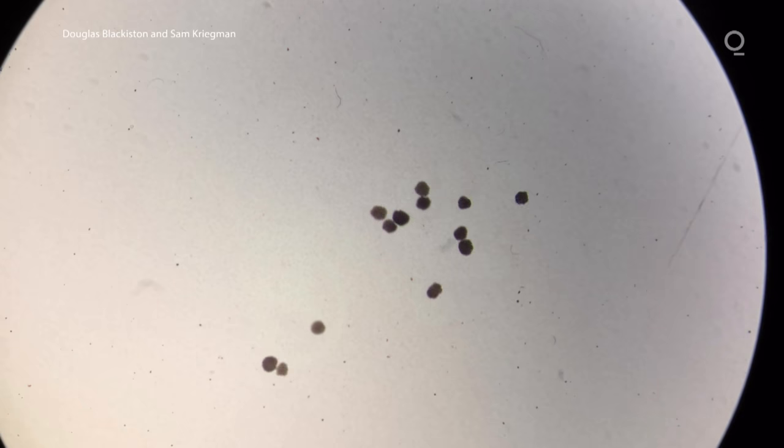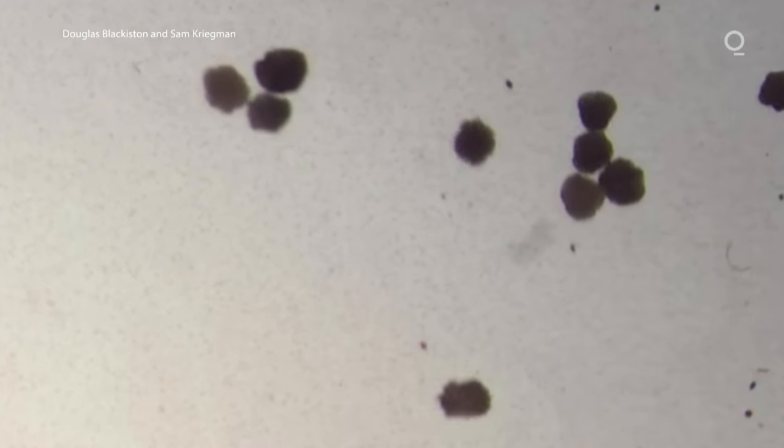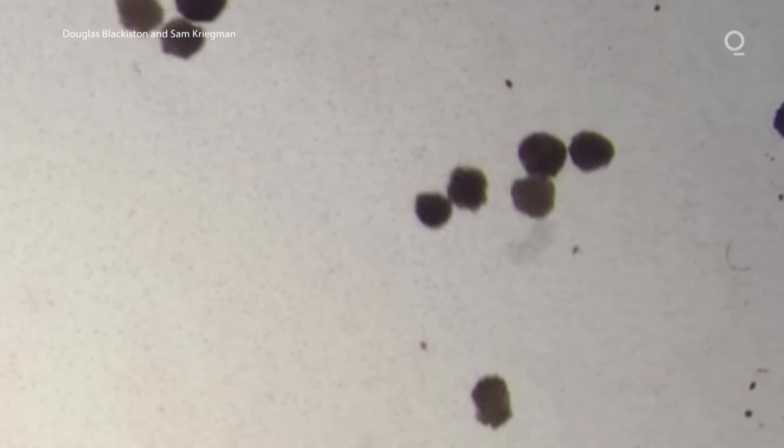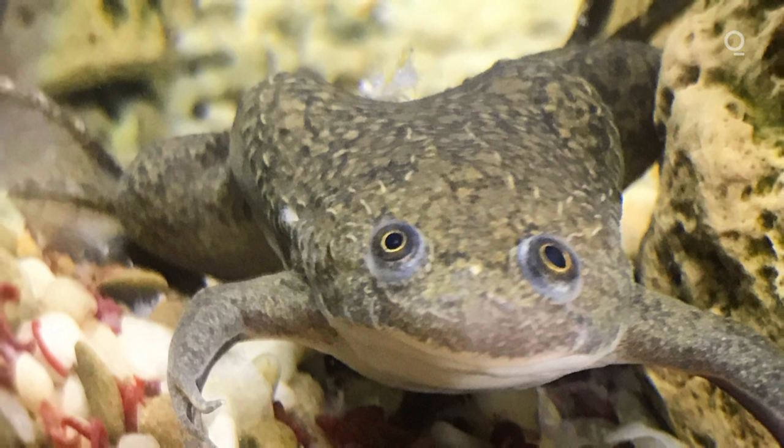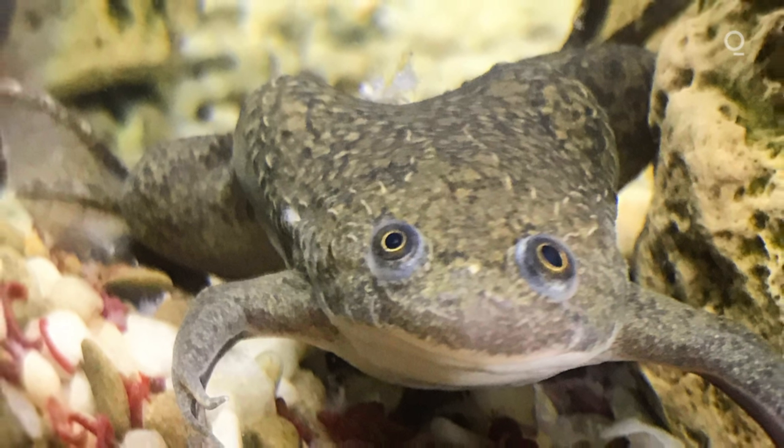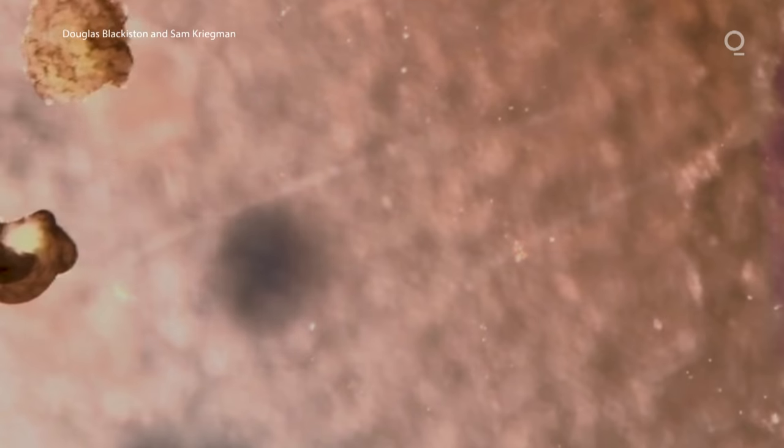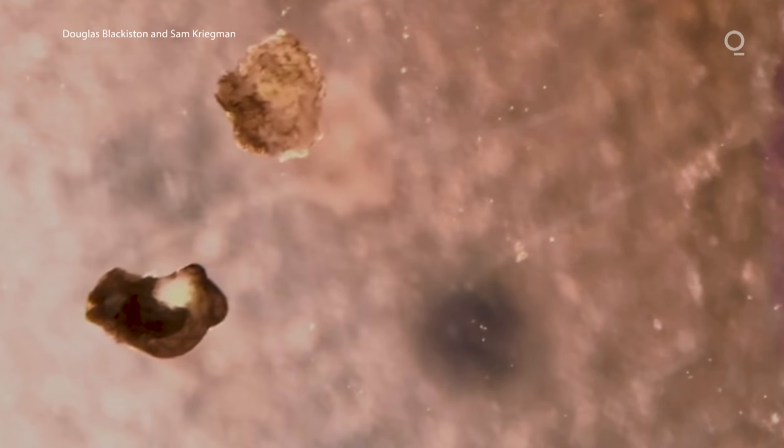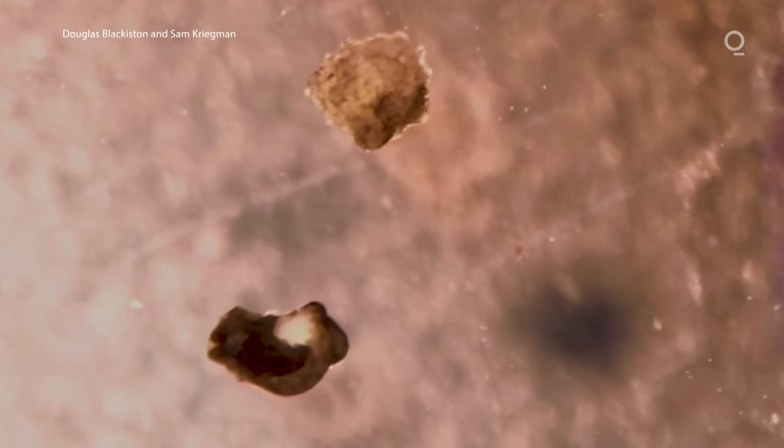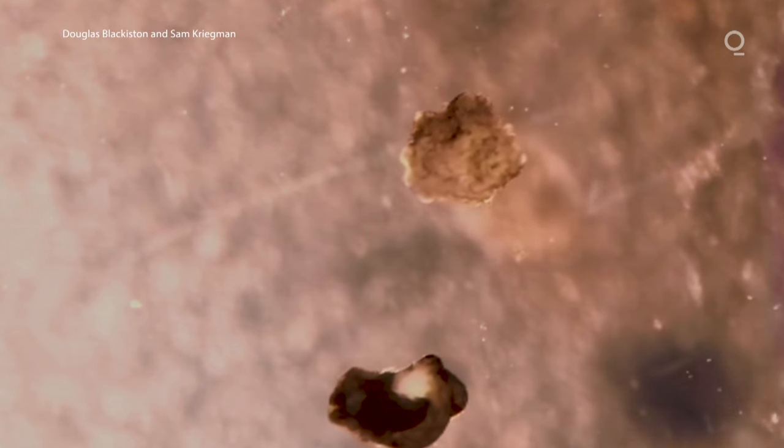These tiny specks, seen here under a microscope, are xenobots, made of about 5,000 living skin cells. They get their name from the African clawed frog Xenopus laevis, which supplies their cells. They can't reproduce and they will only live for around 10 days, feeding on the small platelets of yolk that fill each of their cells.